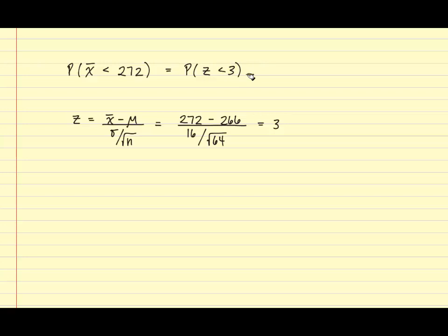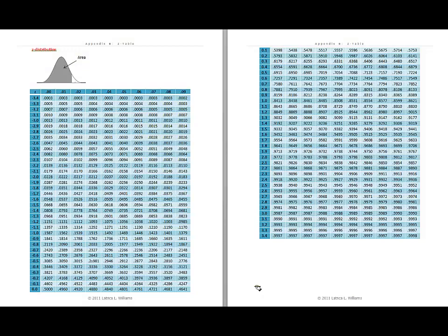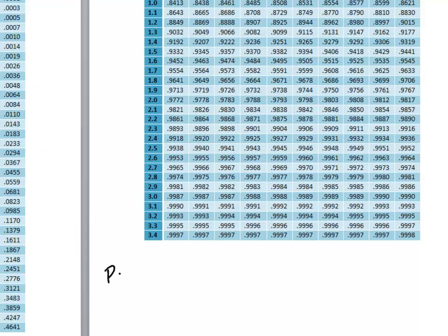So using this information as well as the normal table, we're going to find the probability. We're trying to find the probability that Z is less than 3. So if we draw this out on a curve and label 3, this time we're going to shade to the left.